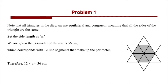First, we notice that all small triangles in the diagram are equilateral and congruent, meaning that all the sides of each triangle are the same. We can call that side length a. We are given that the perimeter of the star is 36 centimeters, which corresponds to 12 line segments that make up the perimeter. Therefore, we can set up the equation: 12 times a equals 36 centimeters.